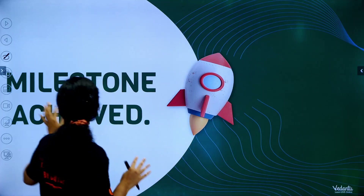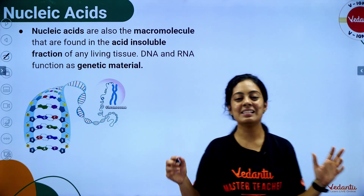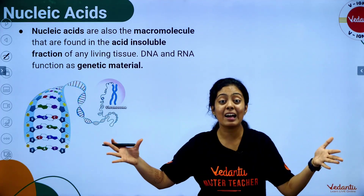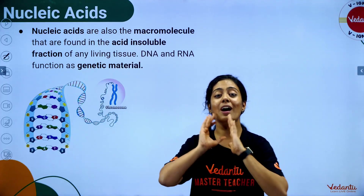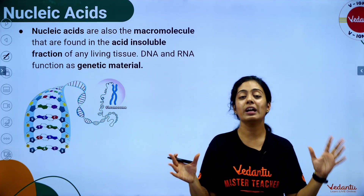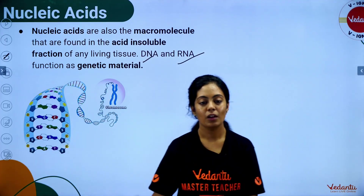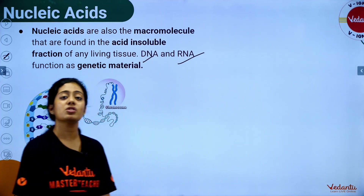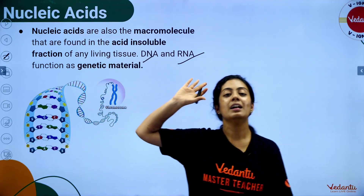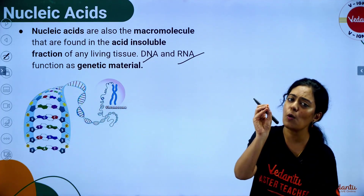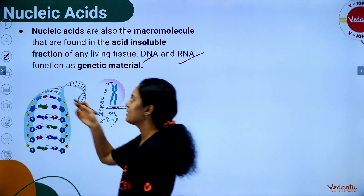Now moving to the most repeated topic — nucleic acids. Nucleic acid is a biomacromolecule present in the acid-insoluble fraction. There are two kinds: DNA and RNA. DNA is the genetic material in 99% of organisms; in a few percent, RNA is the genetic material.